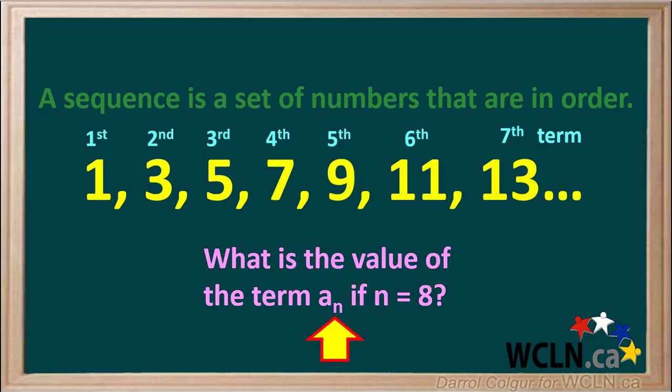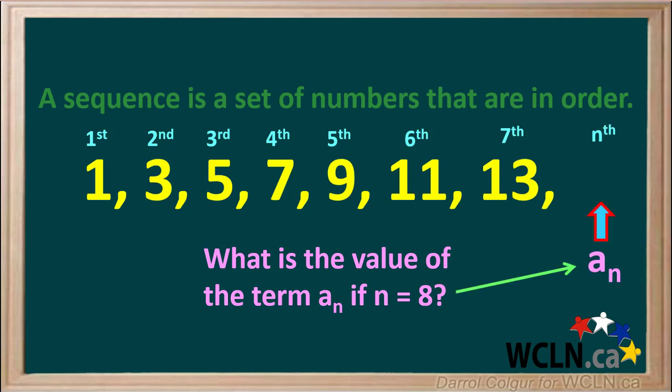Let's say n is equal to 8 — then what number is aₙ equal to? If n is equal to 8, then the term aₙ is equal to the 8th term, which follows the 7th term. The number would be the odd number after 13, which is 15.